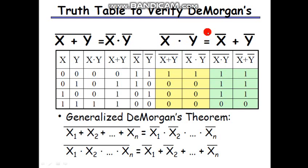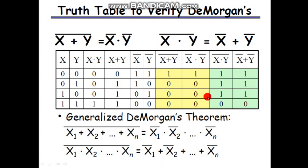To prove the second theorem, observe that (x dot y) whole bar equals x bar plus y bar. Again, the corresponding columns are the same, verifying the second De Morgan's theorem.